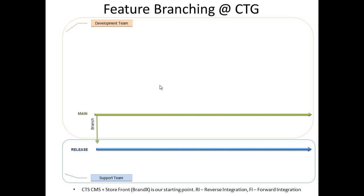Once we have our main branch established, we are ready to create a release branch. This branch is used for applying hot fixes only and not for development of any new features. Once we create the release branch off the main branch, we apply a label identifying the version of our client's site's codebase. The same label is applied to our main branch. At this point, both of our branches are in sync.